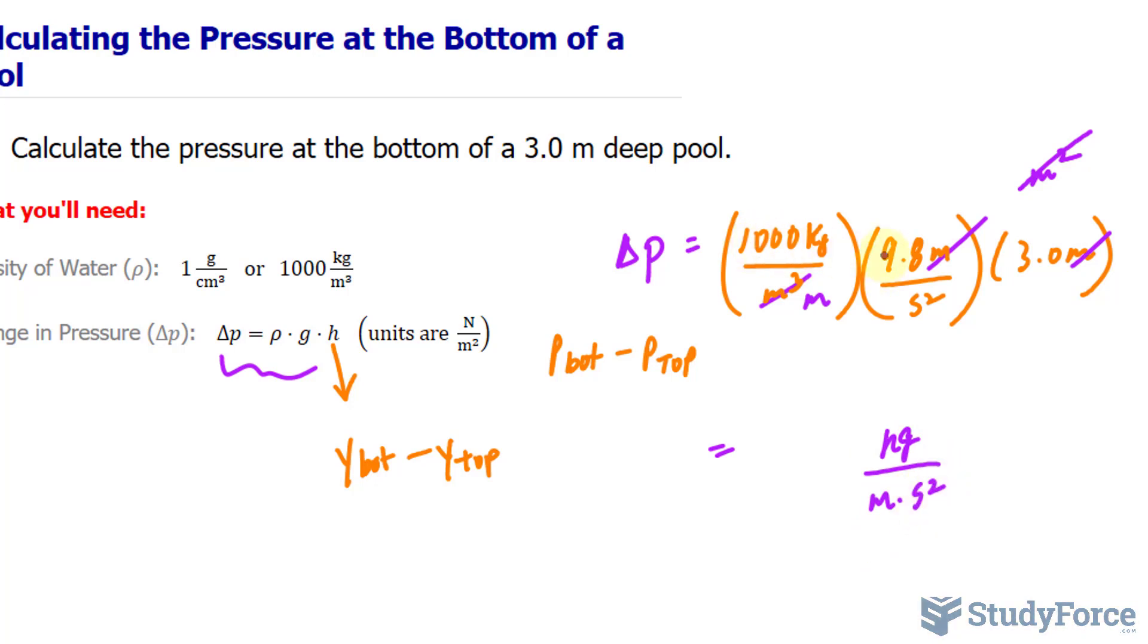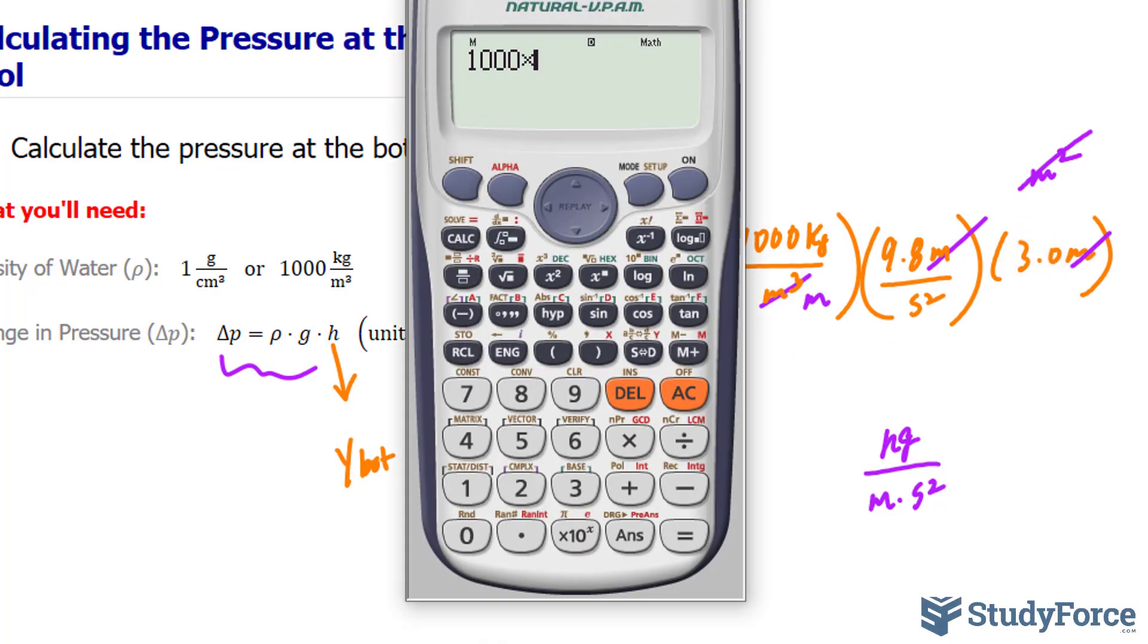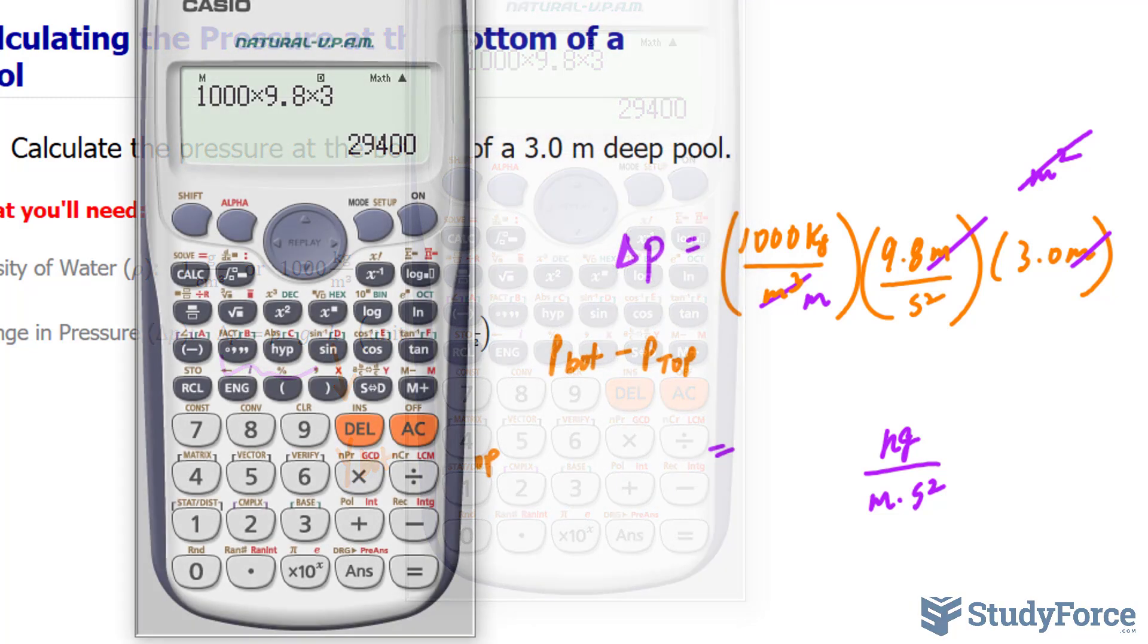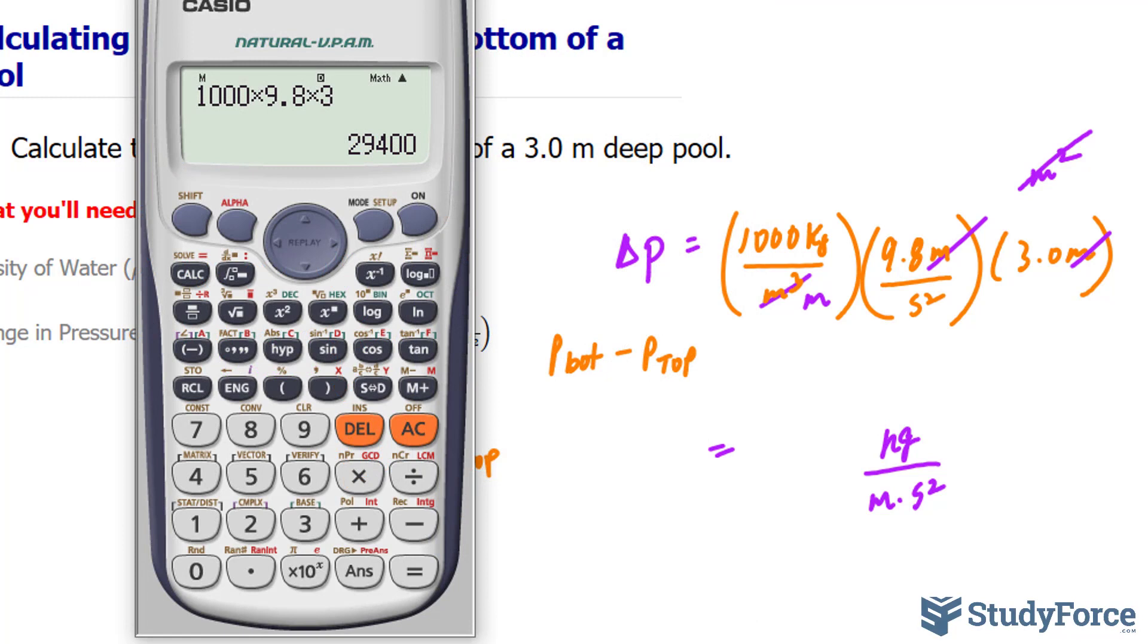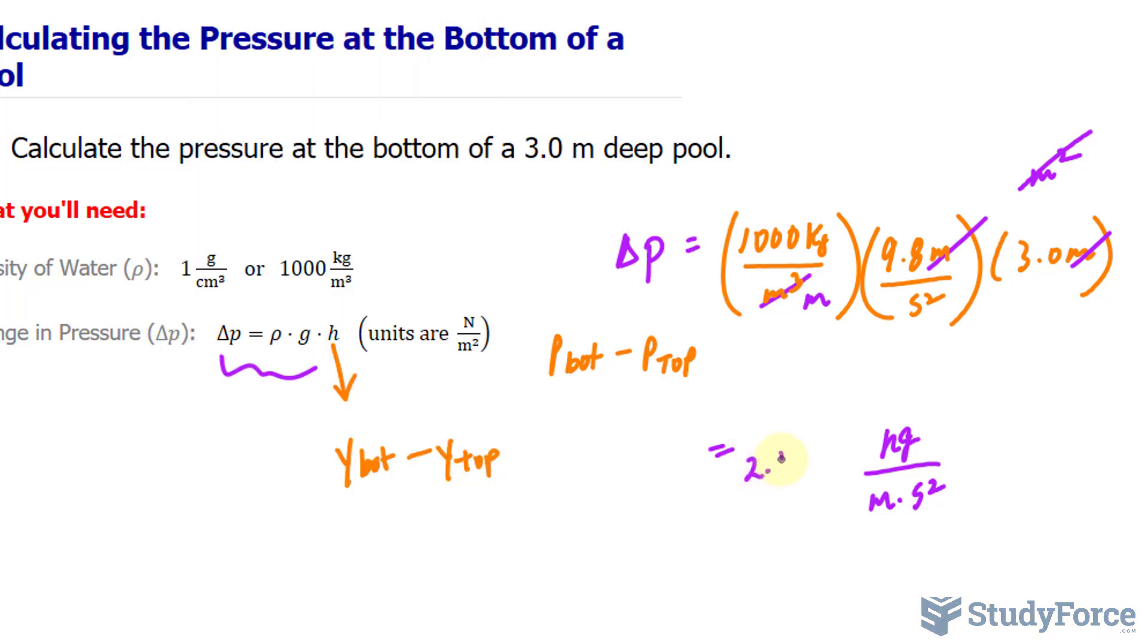In addition, multiplying out 1,000, 9.8, and 3, let's use our calculator. 1,000 times 9.8 times 3 makes 29,400. And we should round this to two significant figures. So I have 2.9 times 10 to the power of 4 kilograms per meter seconds squared.